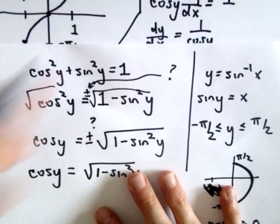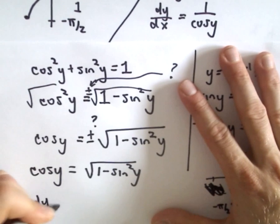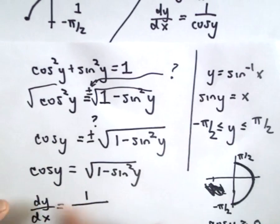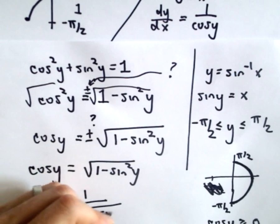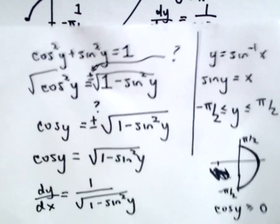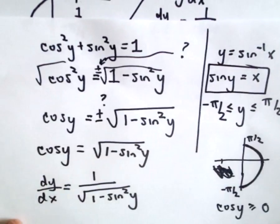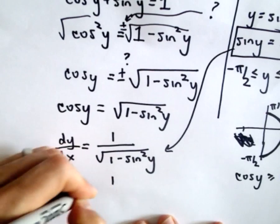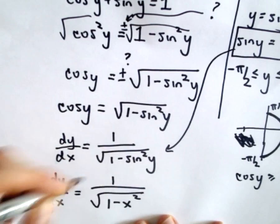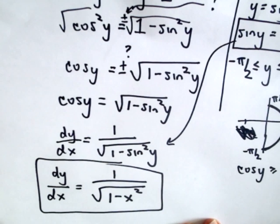Now all we have to do is substitute that in. dy over dx equals 1 over cosine of y, and we said cosine of y equals the square root of 1 minus sine squared y. Since sine of y equals x, we substitute that in as well, and we get dy over dx equals 1 over the square root of 1 minus x squared. We've now got our derivative formula back in terms of x.